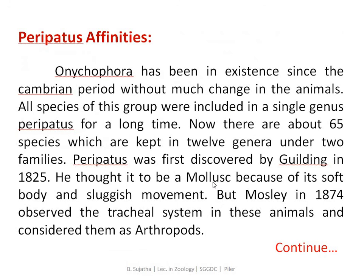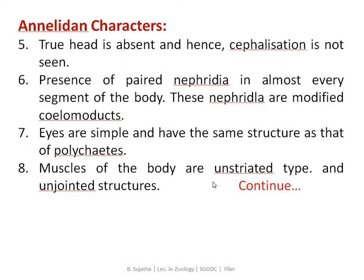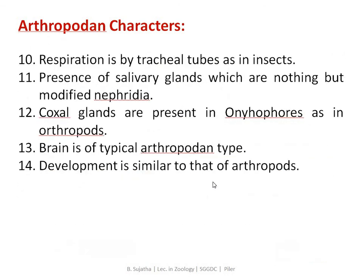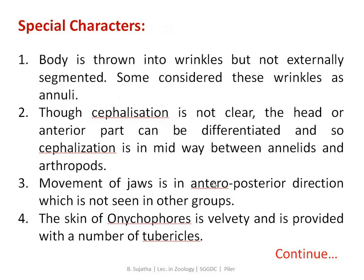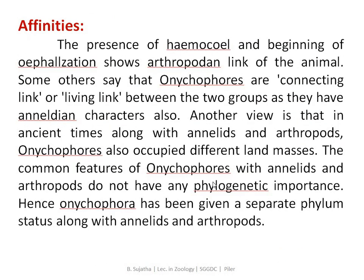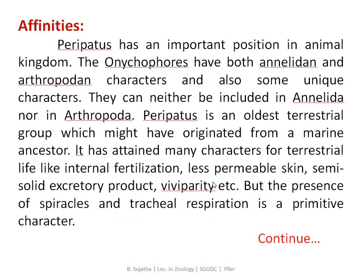Overall, in the previous class we covered the structure of Peripatus, and today's class covered Peripatus affinities — annelid characters, arthropod characters, special unique characters, molluscan characters with little similarity, and the distribution of Peripatus. The distribution of Peripatus is a very important question in zoology examinations.